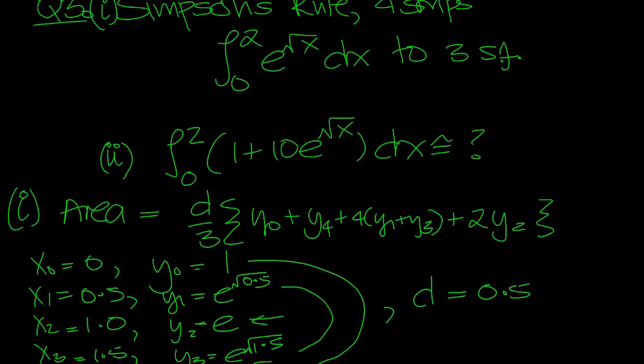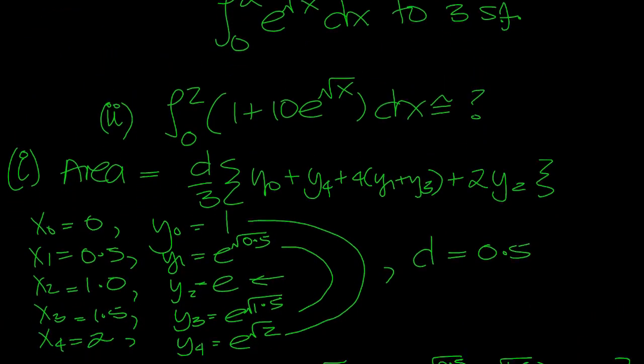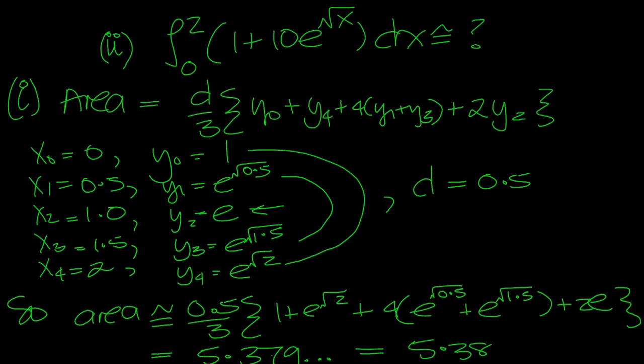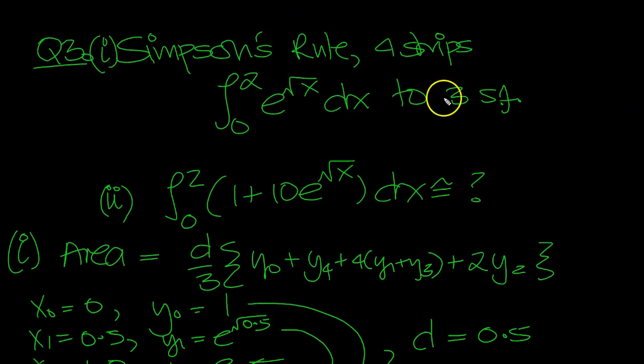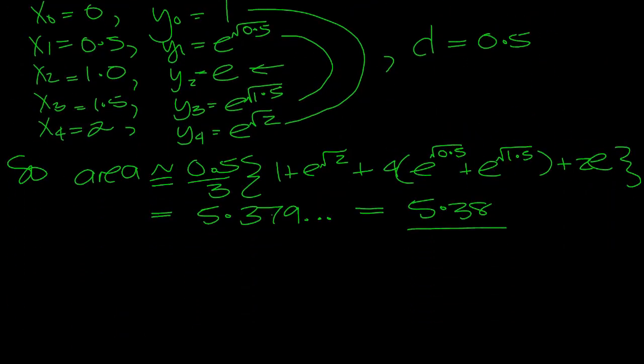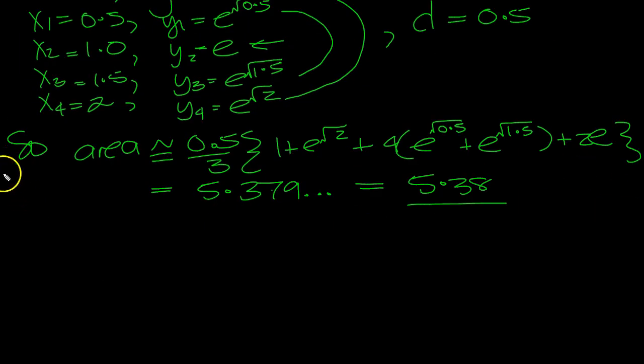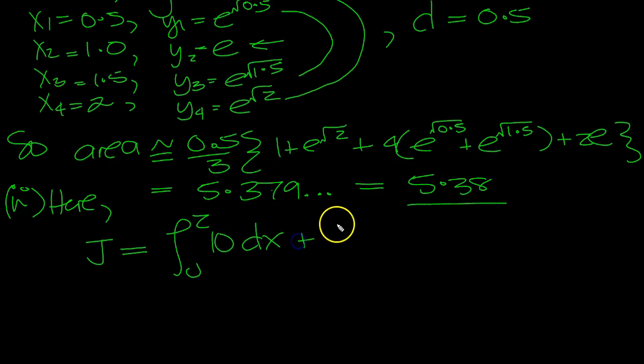Now it's part one. Now we'll cut this approximately. So if we call that i, let's call this i. And I'm going to call that j. So here, j equals integral from 0 to 2, 10 plus 2 lots of 0 to 2 e square root x dx. I think that was it.